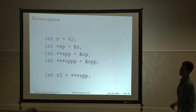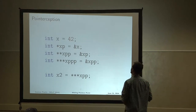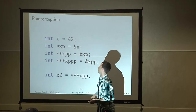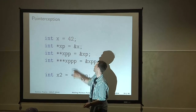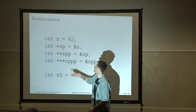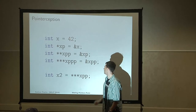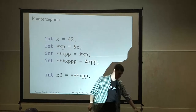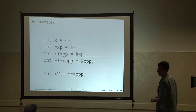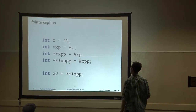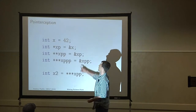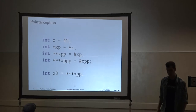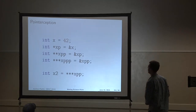You can have pointers to pointers to pointers — pointers all the way down. Say you set x to 42, you can make a pointer to x, you can make a pointer to xp, you can make a pointer to xpp, and then you can dereference them three times to get back the original value of 42. You might be wondering why you can't just put three ampersands there — you can't stack the ampersands.